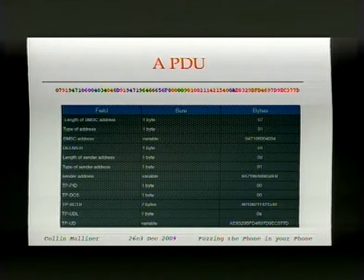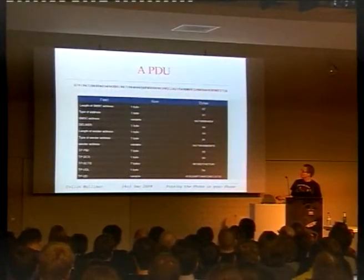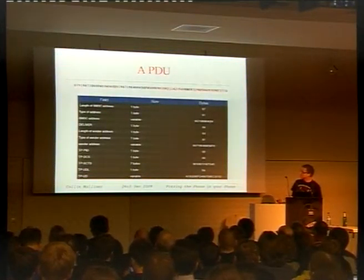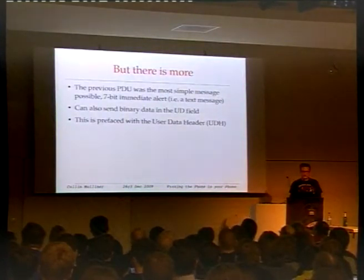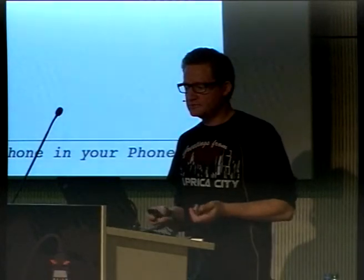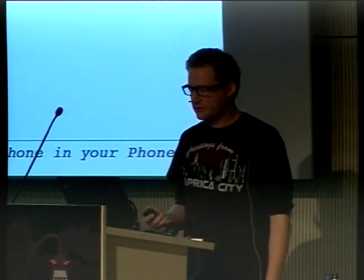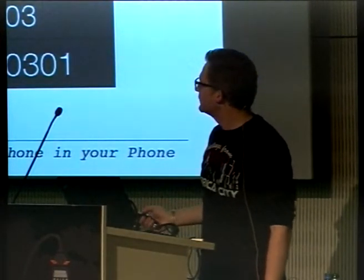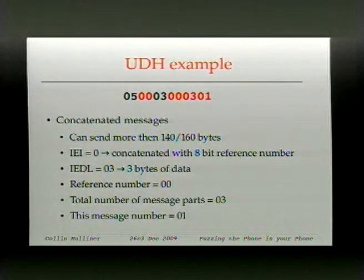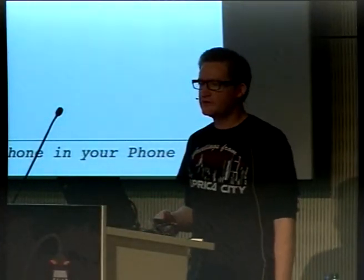An SMS is not just text. You have PDU fields: type of address, SMSC number, different coding schemes, user data header, and the user data payload. There are also extensions like the user data header, which is used mostly for delivering different binary protocols. For example, one user data header indicates this SMS is part of a multi-part SMS — it includes an identifier, a length, the total number of parts, and the current part number. That already gives you a good idea of where you want to go with fuzzing.